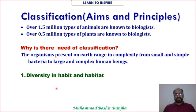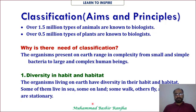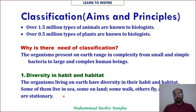There is diversity in habit and habitat among organisms living on Earth. Habitat is basically the place where an organism lives — some live in the sea, some on land. Habit refers to the behavior or activity — some walk, some fly, and still others are stationary.